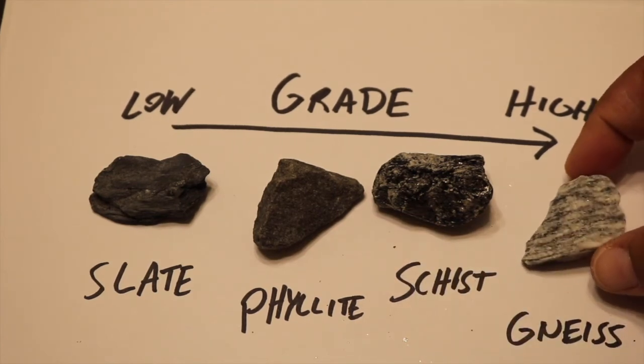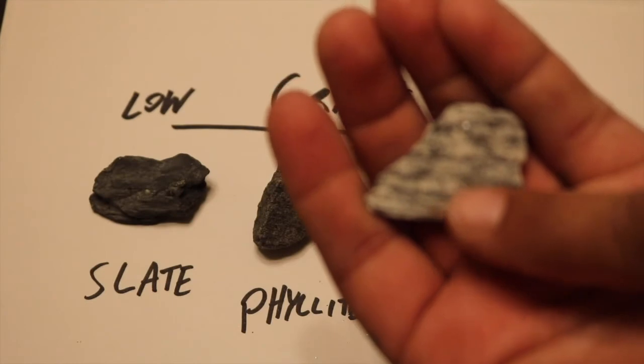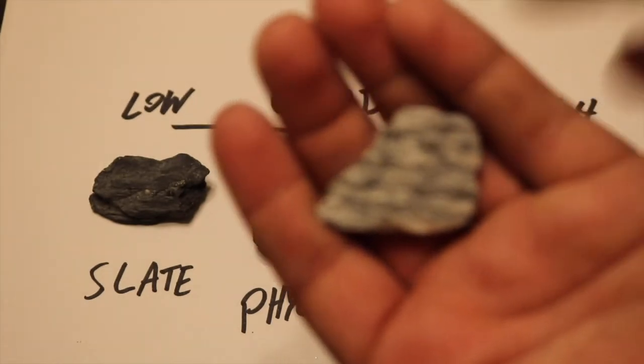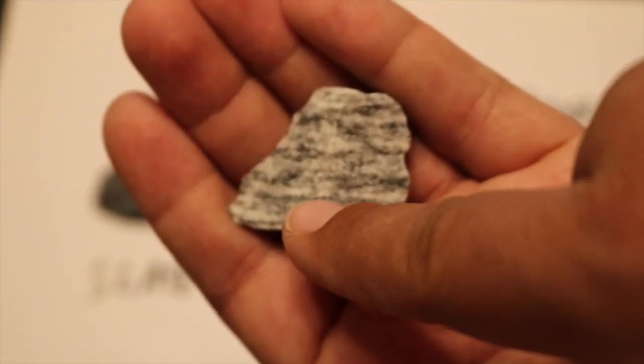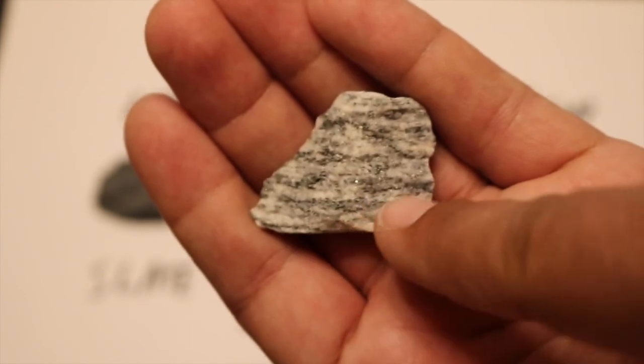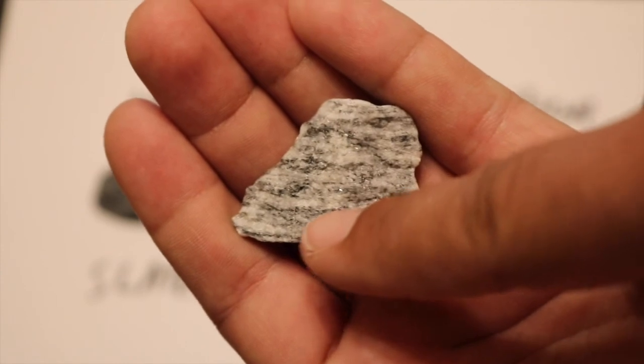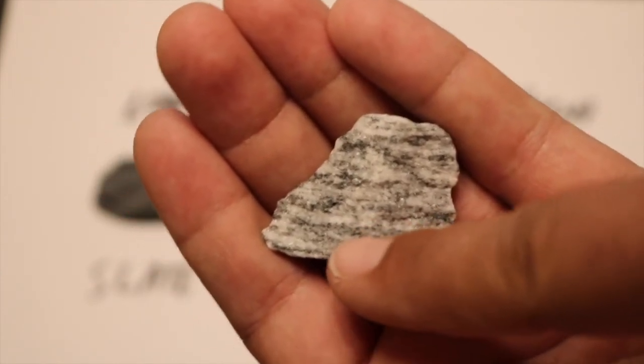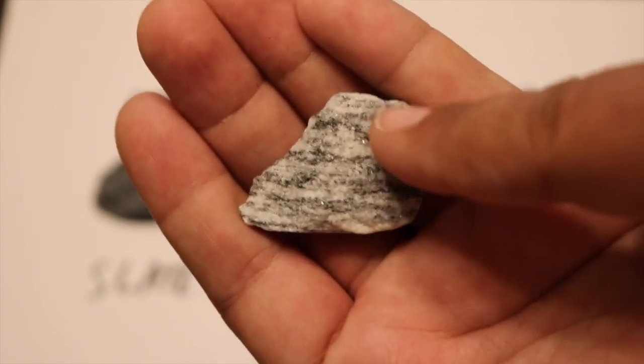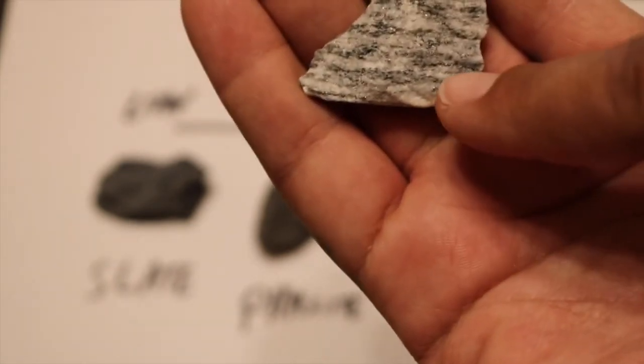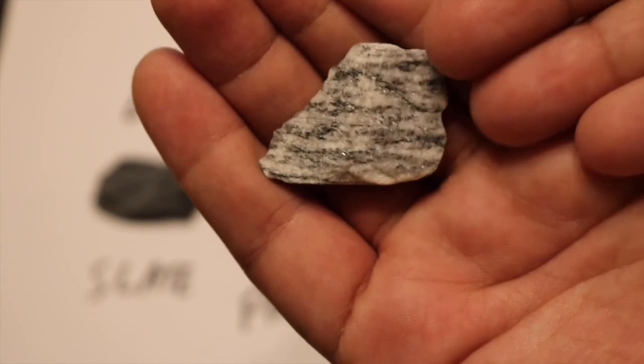This gneiss has a type of foliation that we call gneissic banding. You can see right here this alternation of the dark bands with the light bands. The alternating bands show that the platier minerals are in these darker bands, which are your biotites and muscovites, with the other stuff in between just taking up the spaces. But the alternating colors are a very good indication of foliation.